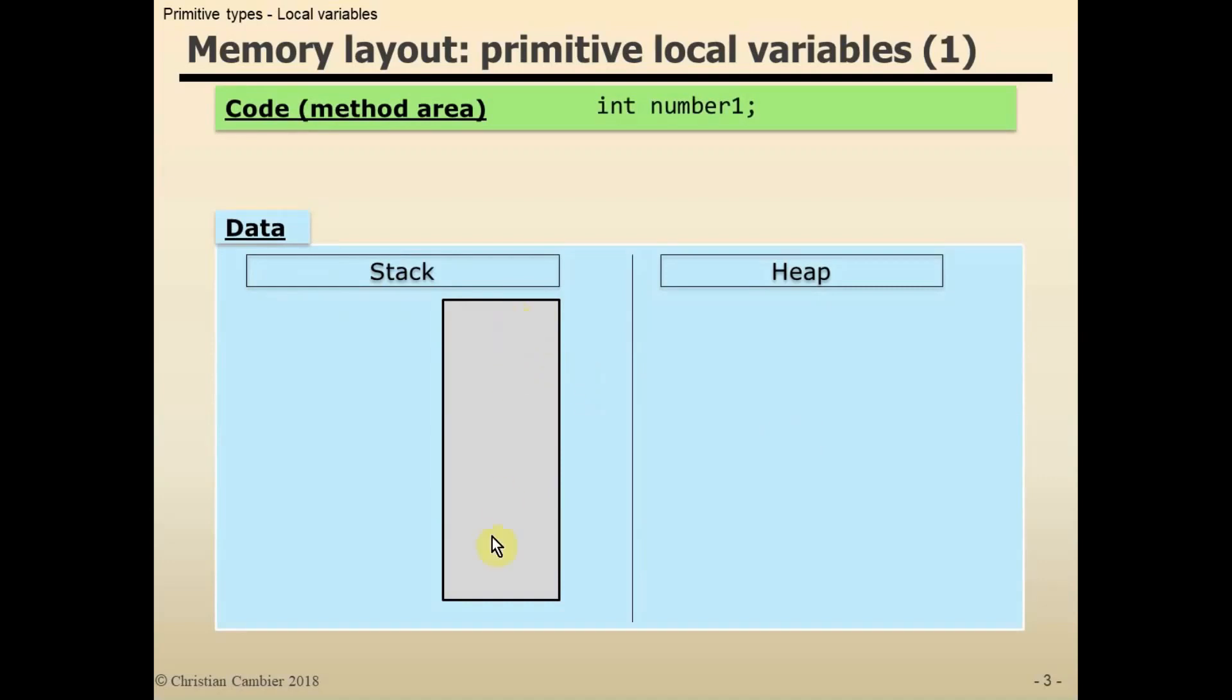The stack is represented here by this gray rectangle and it implies a width of 32 bits. When I declare int number1, we see the actual variable having a full width, since an integer is 32 bits.